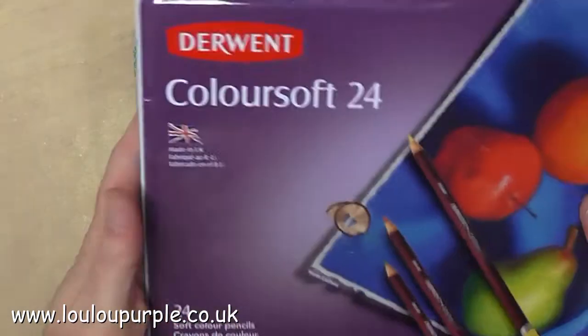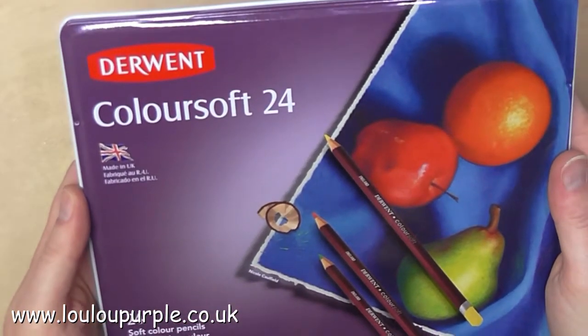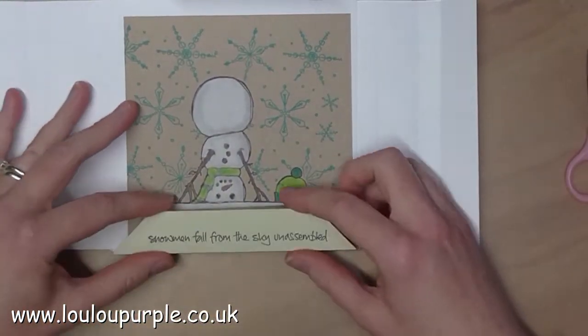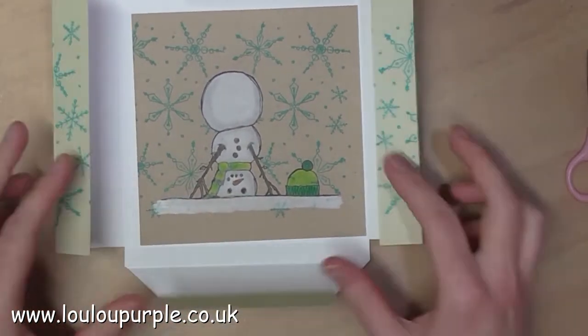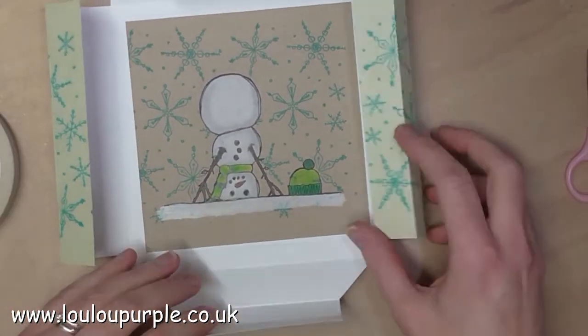I am now going to use my Derwent Coloursoft pencils to colour in my image. Once the image is coloured in, I stick it to the bottom of my shadow box.